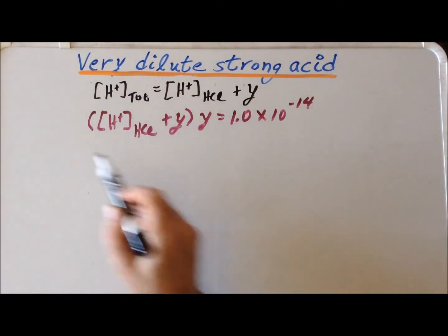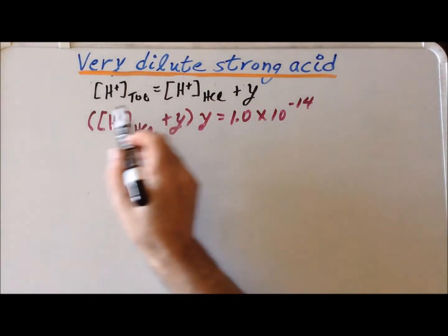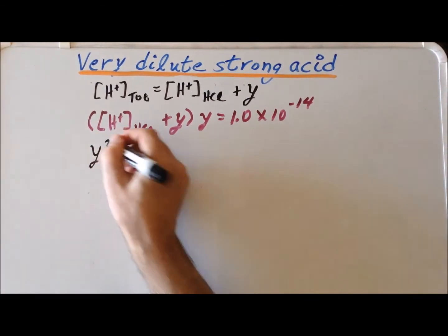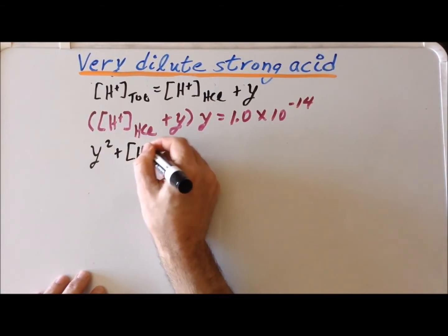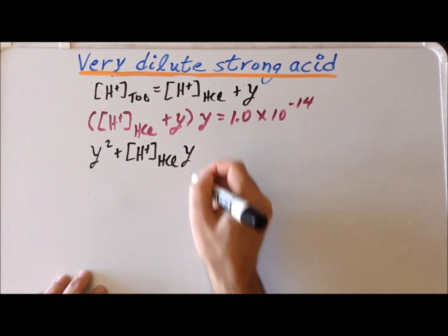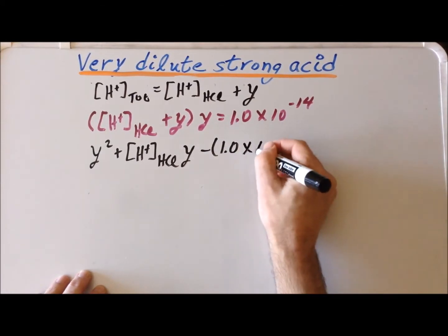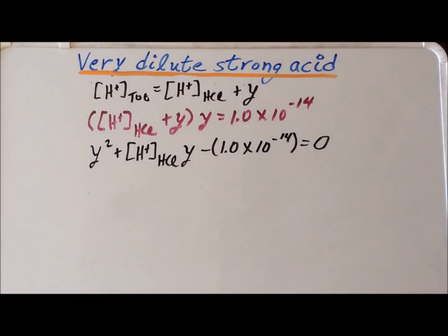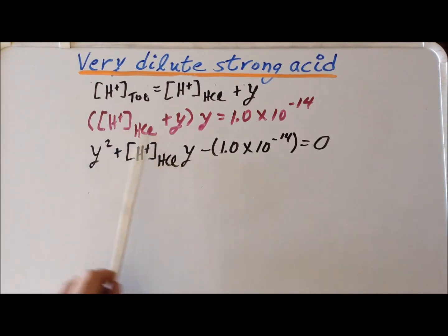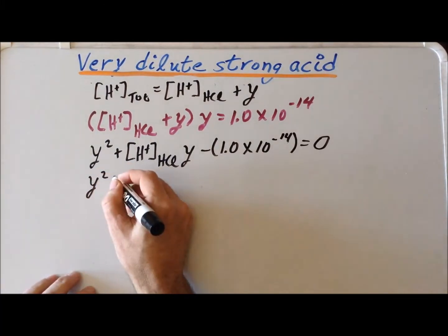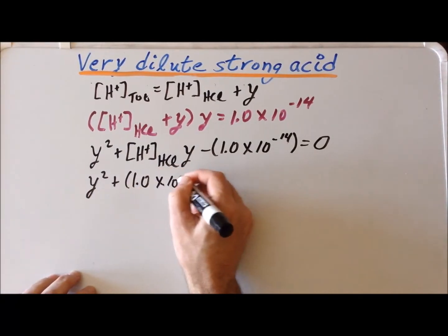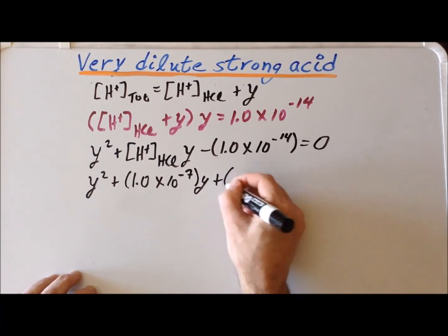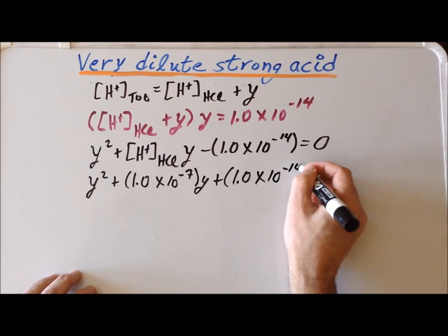Applying the distributive law and basic algebra, we convert this into the quadratic: Y² plus [H⁺]_HCl times Y minus 1.0×10⁻¹⁴ equals zero. Substituting the known concentration of HCl, which equals [H⁺]_HCl for a strong acid, we get: Y² plus 1.0×10⁻⁷ times Y minus 1.0×10⁻¹⁴ equals zero.